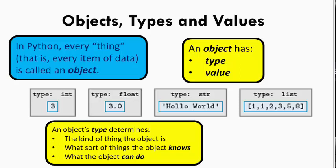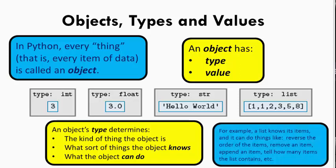Likewise, a string knows its characters and can do things like return an uppercase version of the string. Likewise, a list knows its items. It can reverse its items, tell how many items the list has, which is called the list's length, and many other operations as well.